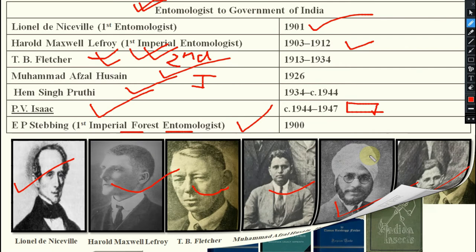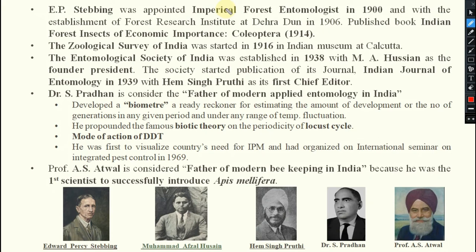From forest entomology: Epi Stebbing was appointed as the first Imperial Forest Entomologist to the Government of India. Note: first Imperial Entomologist is Lefroy, but first Imperial Forest Entomologist is Stebbing. With the establishment of the Forest Research Institute (FRI) at Dehradun in 1906, he published the book 'Indian Forest Insects of Economic Importance — Order Coleoptera.' This is also a very important point — where FRI is headquartered, when it was established.